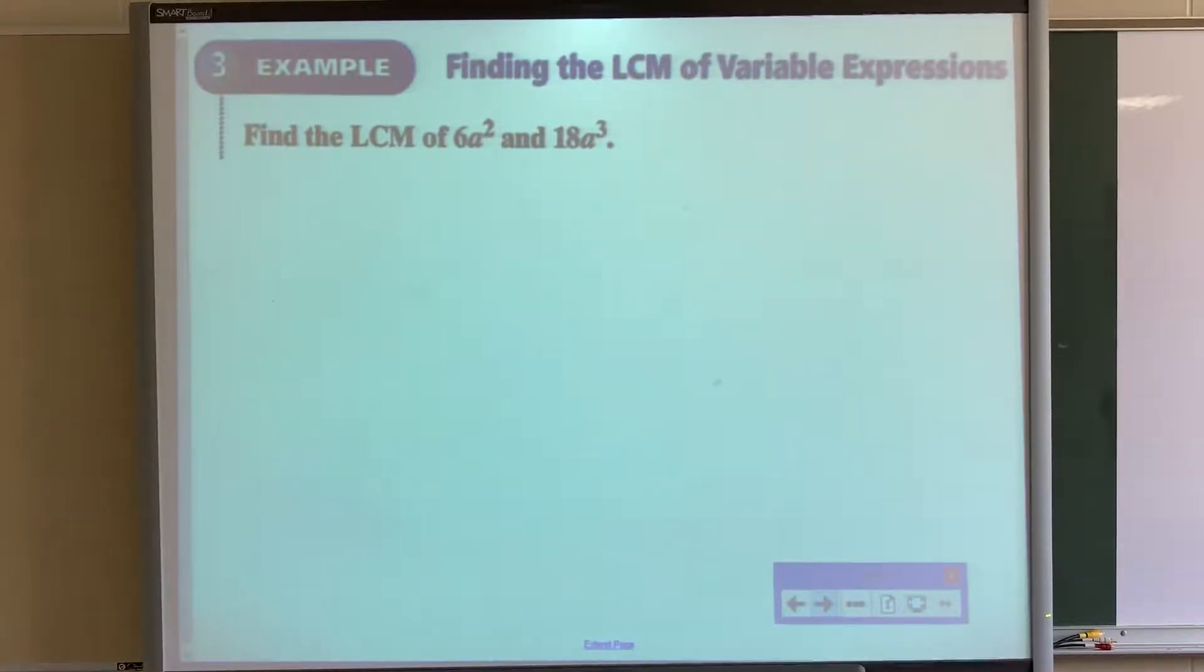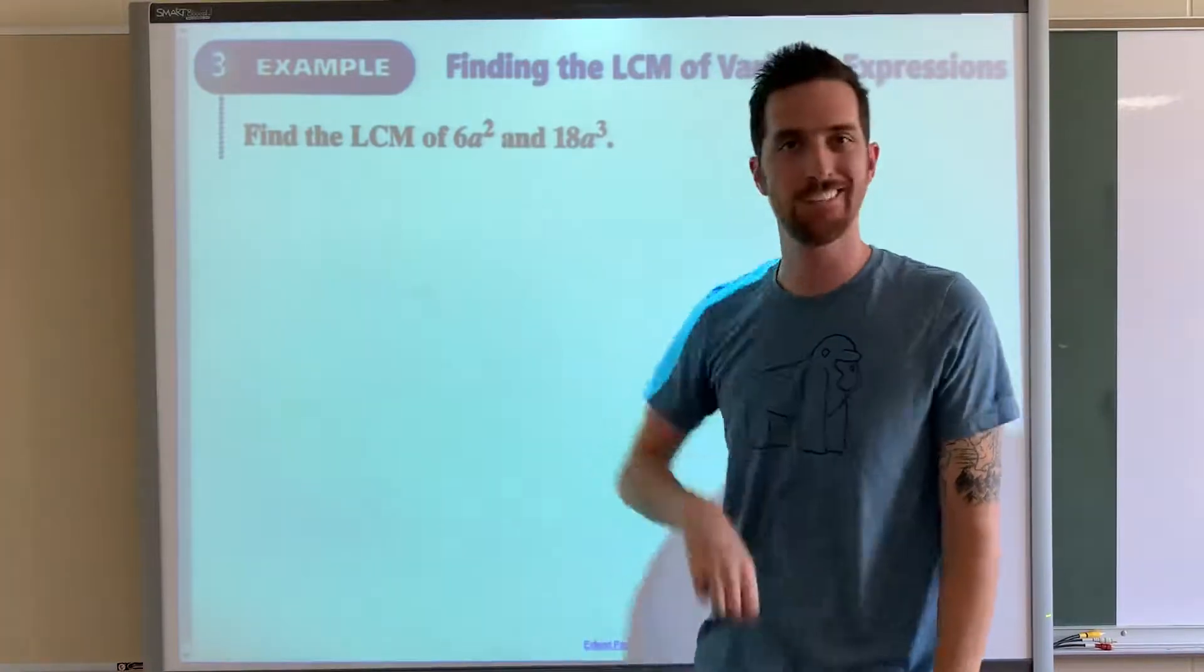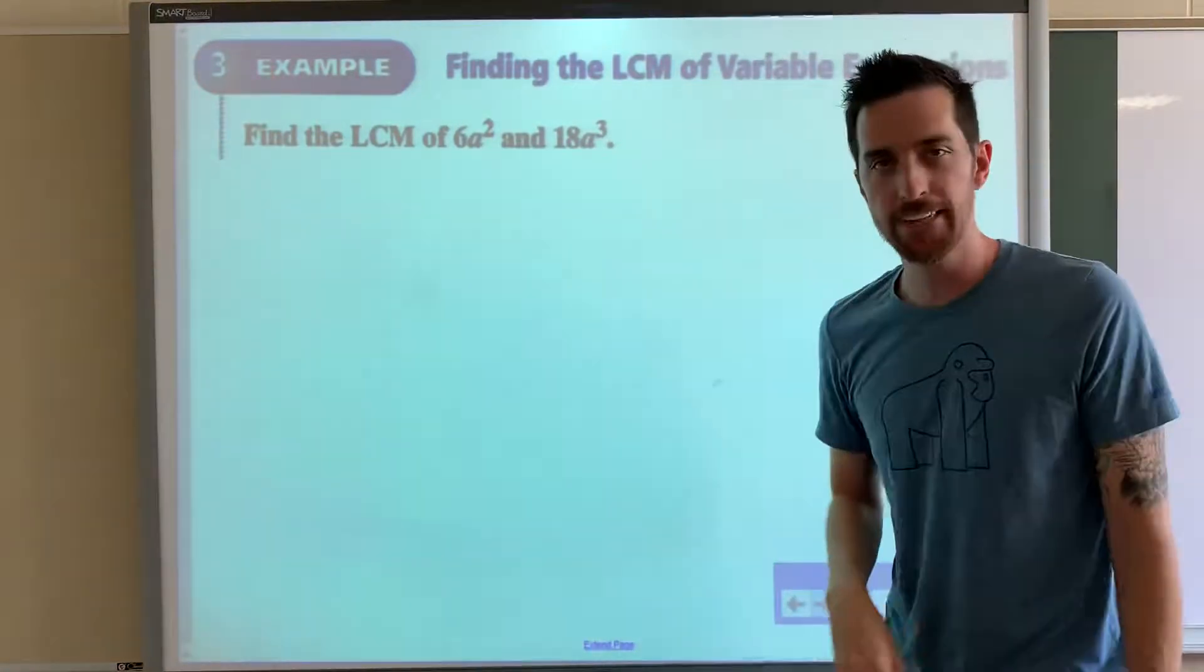Bring in some variables. Find the least common multiple of variable expressions. We've got 6a squared and 18a to the third.